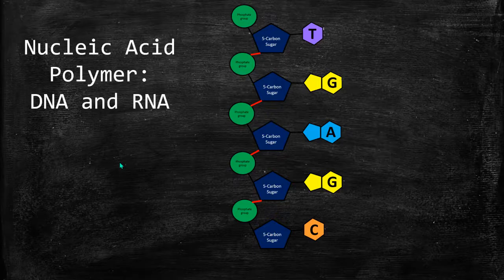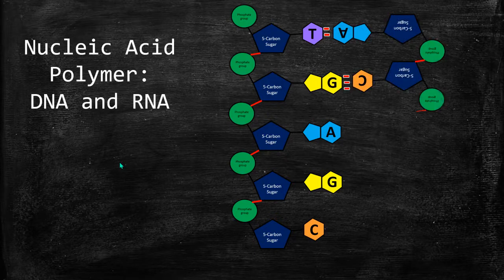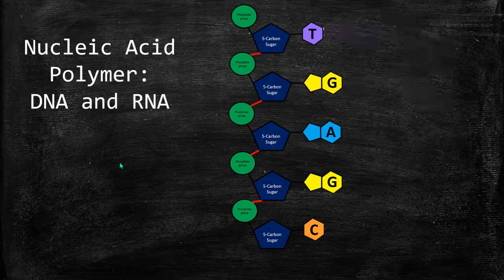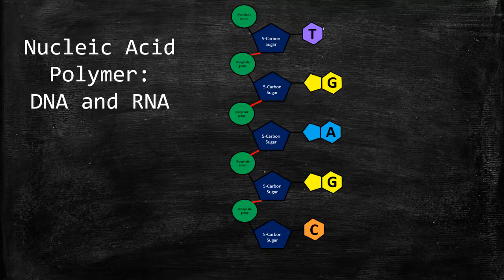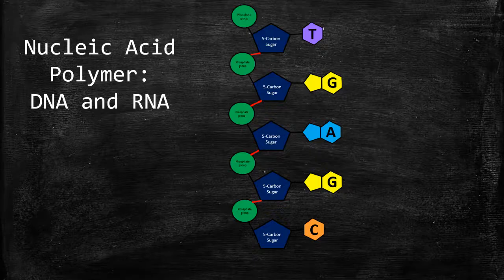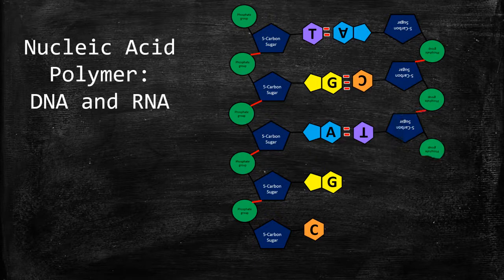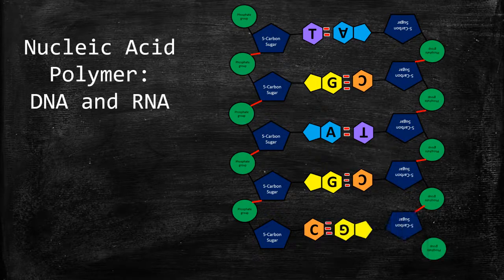When we look at the polymer, it's a chain of these nucleotides. If you have a single strand where T is replaced by U, this could be RNA. But if you have a double strand, this would be DNA. You can see how it's made of repeating monomers called nucleotides.